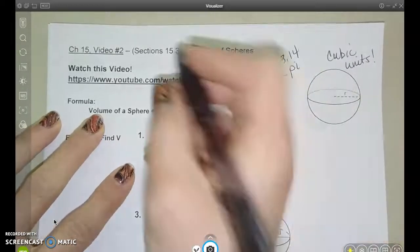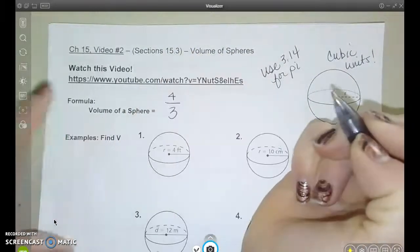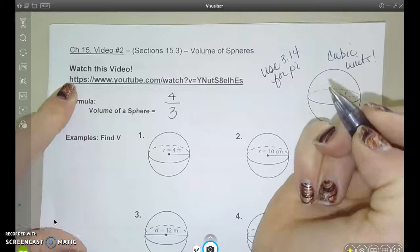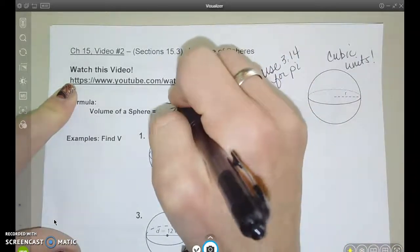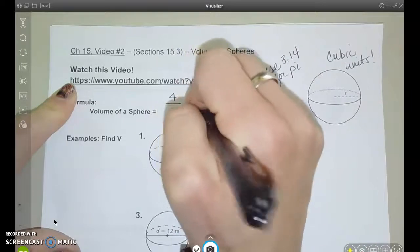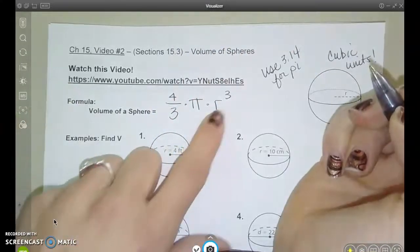So remember, or if you don't remember, a sphere is kind of a three-dimensional circle. Think of the globe or a ball, and the formula for the volume of a sphere is four-thirds times pi times r cubed, the radius cubed.